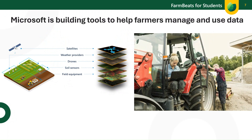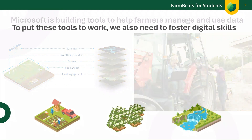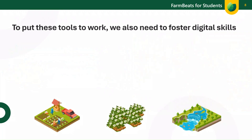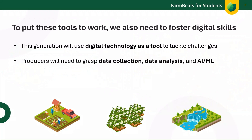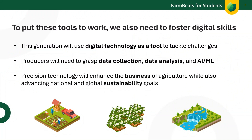Aggregated across the globe, precision agriculture will be essential to upholding environmental sustainability while feeding an increasing global population. This generation will use digital technology as a powerful tool to address various challenges. Producers will need to understand data collection, data analysis, and the applications of AI and machine learning. Precision technology will not only improve agriculture business, but also support national and global sustainability goals.